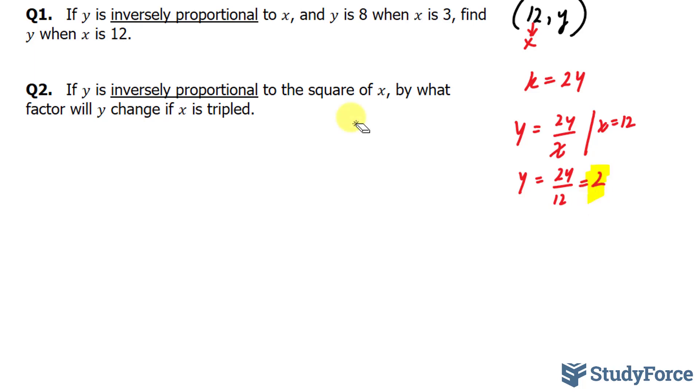Question 2 reads, if y is inversely proportional to the square of x, that's very important, by what factor will y change if x is tripled? To represent this algebraically, y equals k over x to the power of 2. Square of x is represented as x to the power of 2.